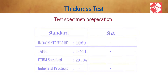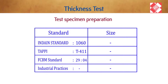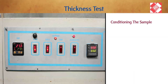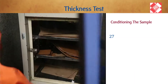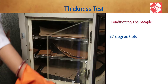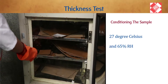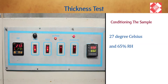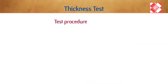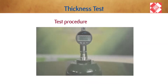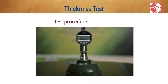Sampling: with respect to lot size. Test specimen preparation: condition the sample at 27 degrees Celsius and 65 percent relative humidity.